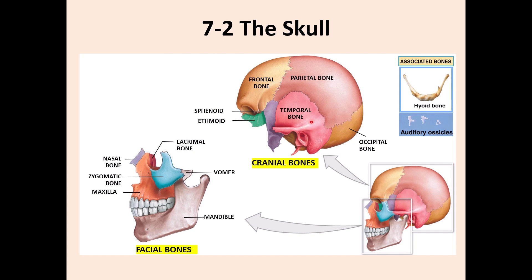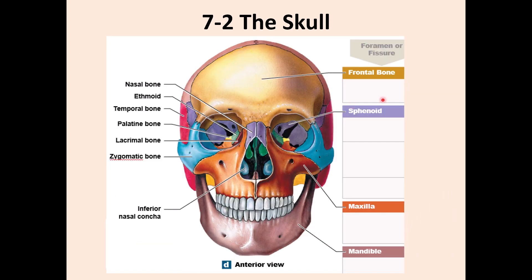This is the view of the skull from the frontal view. You can divide it into three parts: the upper part, the middle part, and the lower part. In the upper part, the main bone you see is the frontal bone. In the background you can see the parietal bone. In the middle there is a lot going on - this is the orbital cavity, where the eyes are located.